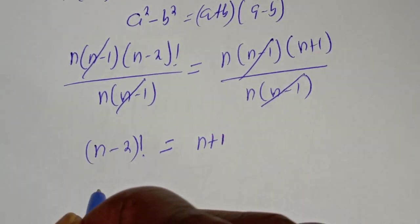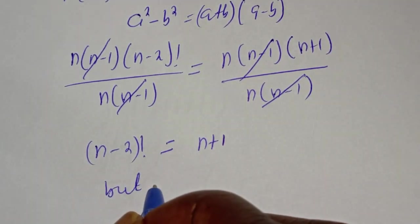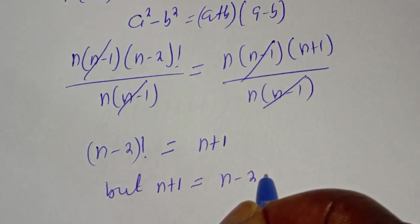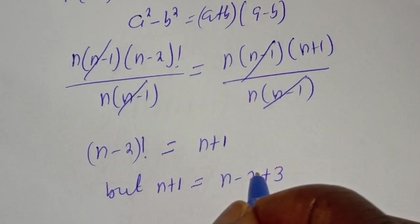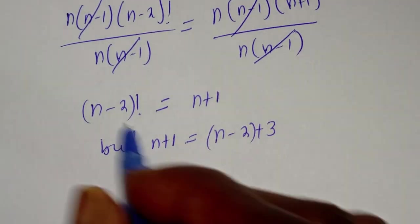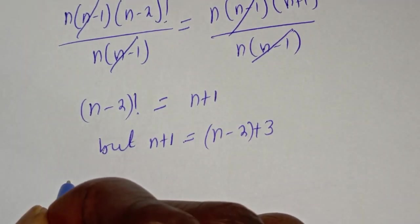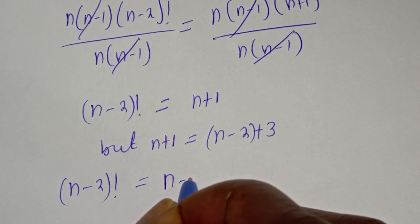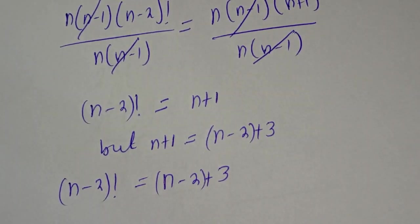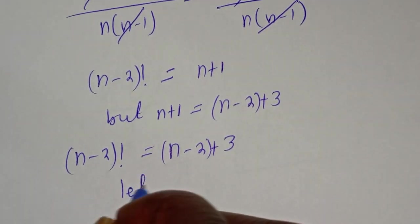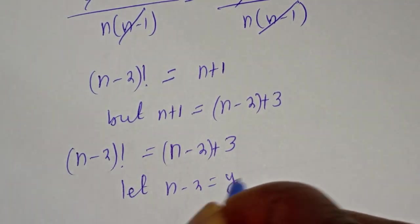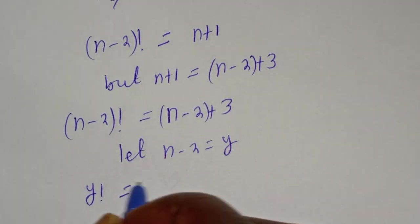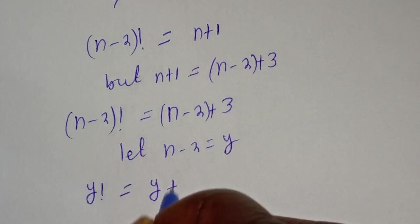But n plus 1 is equal to n minus 2 plus 3. We can express it that way. So this is n minus 2 factorial is equal to n minus 2 plus 3. Now let n minus 2 equal to y. So this is y factorial is equal to y plus 3.